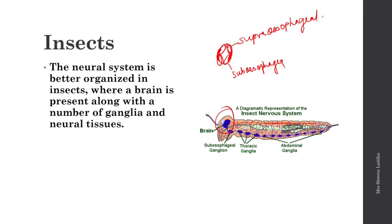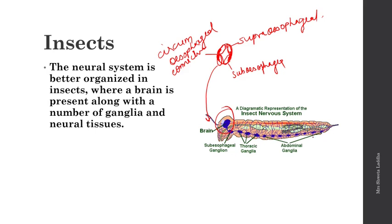The circumoesophageal connective surrounds the esophagus and connects the suboesophageal and supraoesophageal ganglia. Insects also have a ventral nerve cord situated in the ventral region, which is ganglionated. There are three thoracic ganglia in the thoracic region.